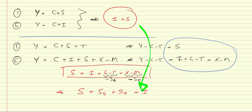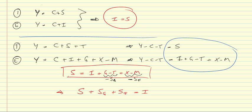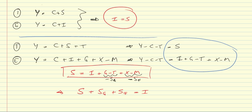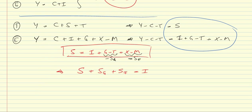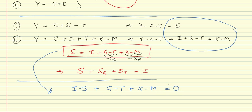Let me clean that up and add one thought to this argument. I can rewrite this condition by bringing the private savings to the right-hand side. Then I get I minus S plus G minus T plus X minus M equal to zero.